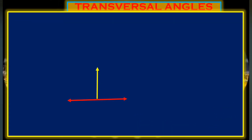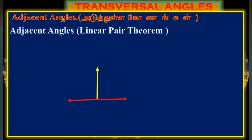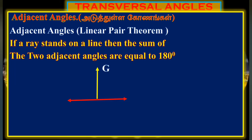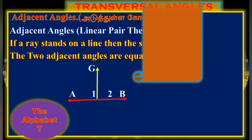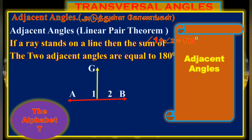Now I will document it from the transversal angle. It is an adjacent angle. If the adjacent angle stands on a line, then the sum of the two adjacent angles is equal to 180 degrees. If the ray stands on a line, the same angle is equal to 180 degrees. This is the shortcut of T — we can apply T to find the transversal angle.